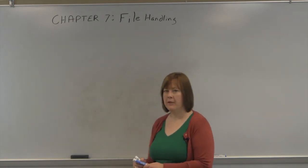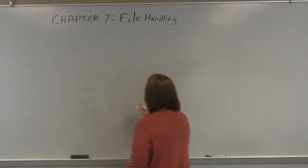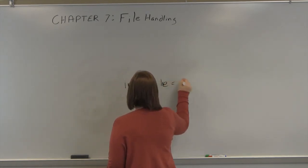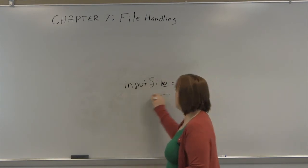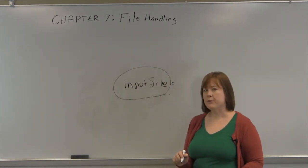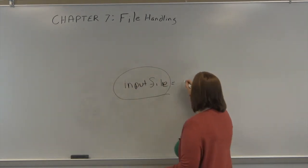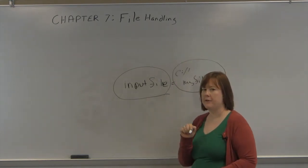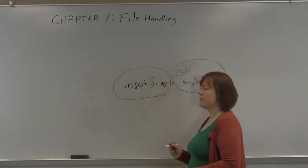You'll typically give it a name like input file equals, and so this would be your variable name. And you'd just refer to it as input file. And then you'd have my file.csv, and you might have c colon slash slash. You'd usually have the path, if it's on a PC or a modern computer, to where the file is.